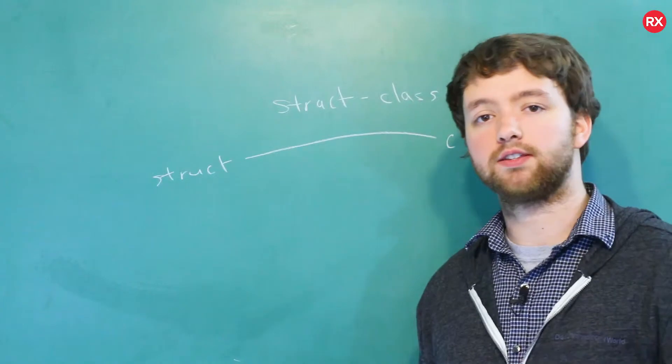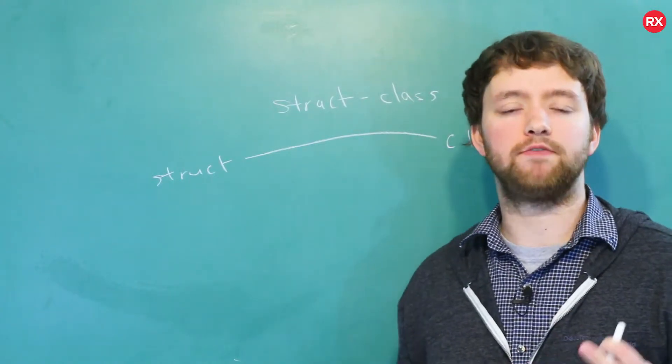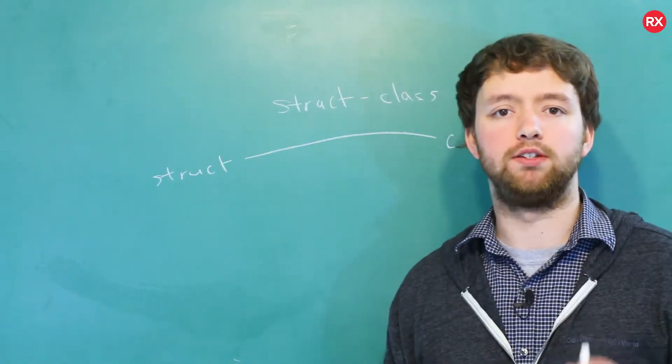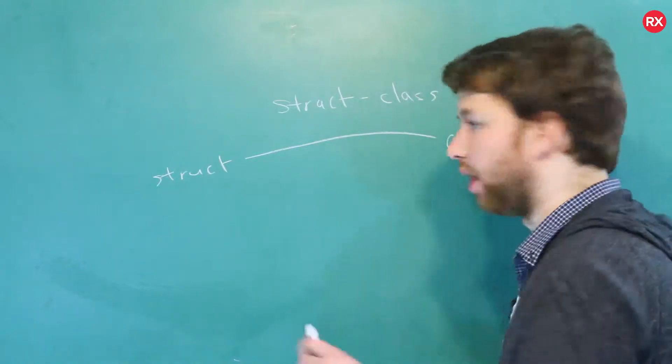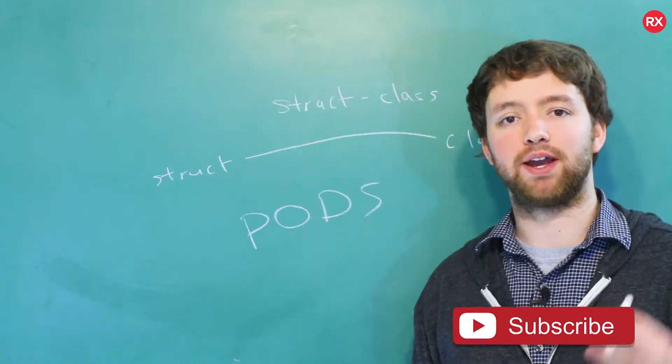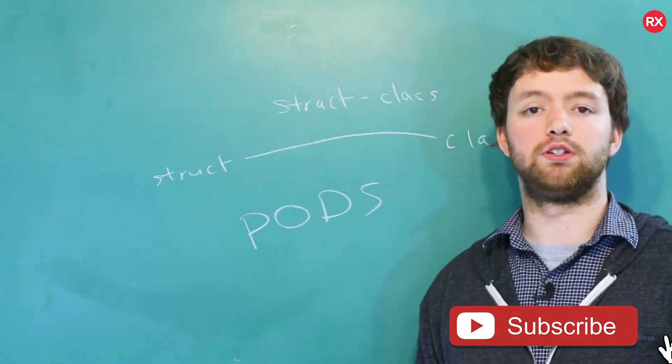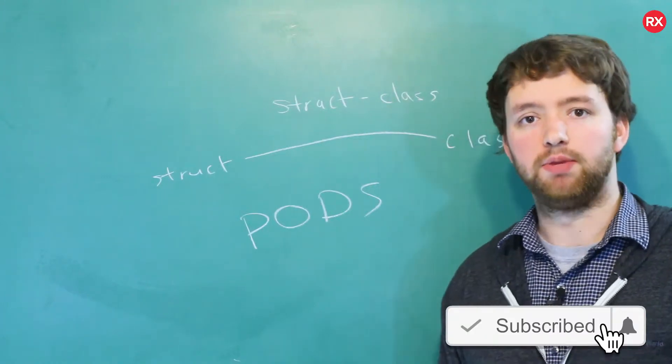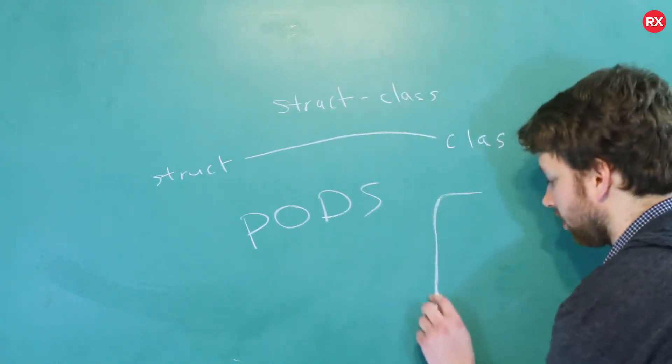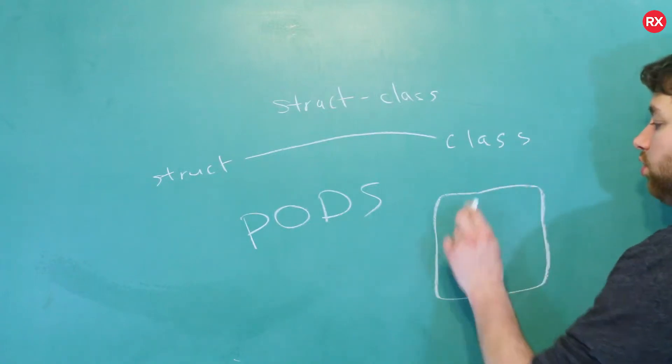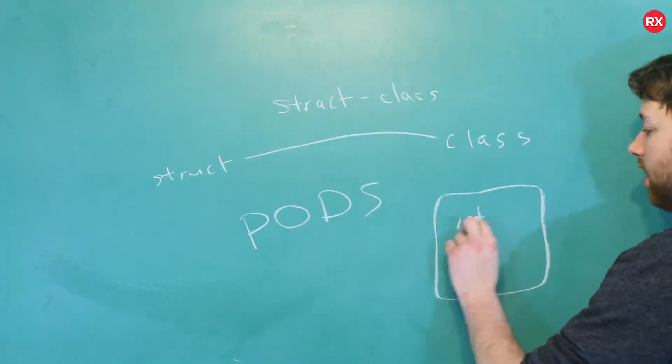Now by convention, structs inside C++, people will often use them for plain old data structs, so PODs. And what that means is by convention, they are only really used to contain data members, meaning variables. So inside of that struct definition, you can put variables such as int x, but you can also put methods.